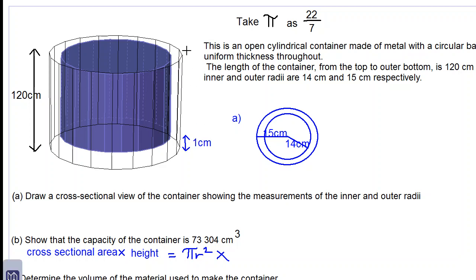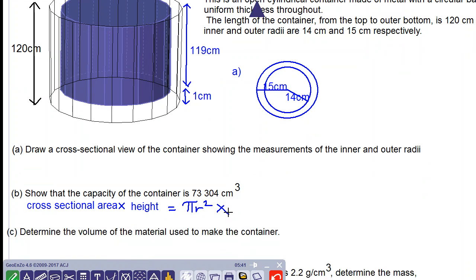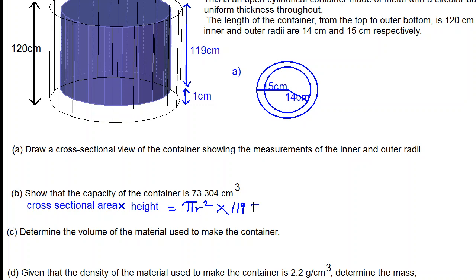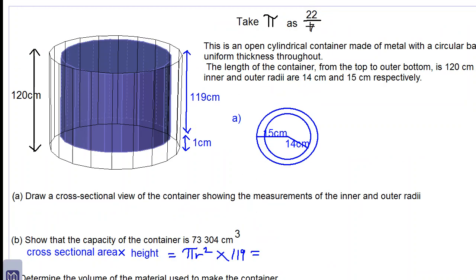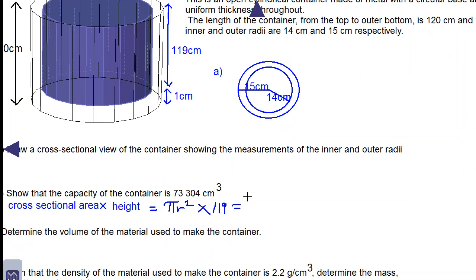Therefore, the height of the blue region, or the blue cylinder, has to be 120 subtract one, which is 119 cm. So we use the height as 119 centimeters. Pi is given as 22 over 7, and we have to use what the question has given us for pi.